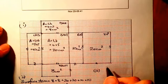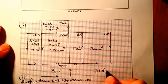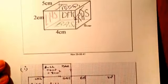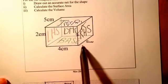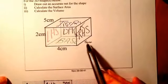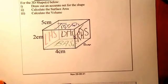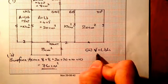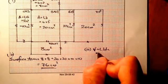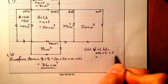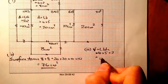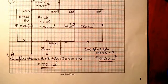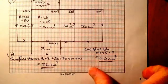Now let's work out the volume. The volume of a cuboid is length times breadth times height. Going back to the original: length times breadth times height is four times five times two. The volume equals four times five times two — that gives me 20 then 40 — and that's going to be 40 centimetres cubed.